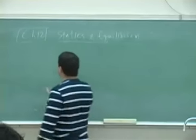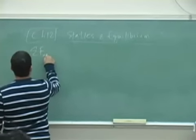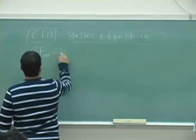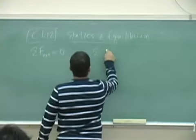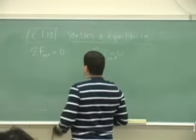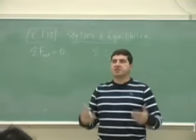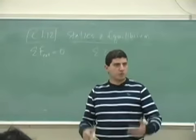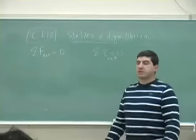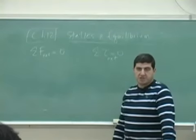Chapter 12 is a lot easier. So chapter 12 concerns those kinds of situations where an object is stationary, it's static, it's in equilibrium, therefore sum of all the forces on it is zero, sum of all the torques on it is zero.